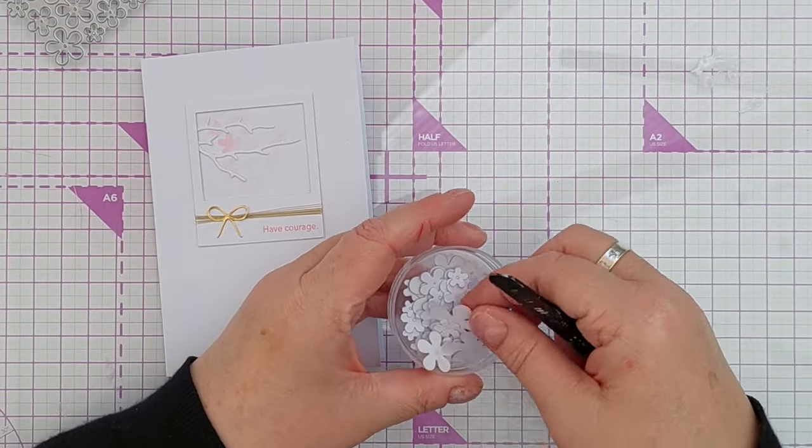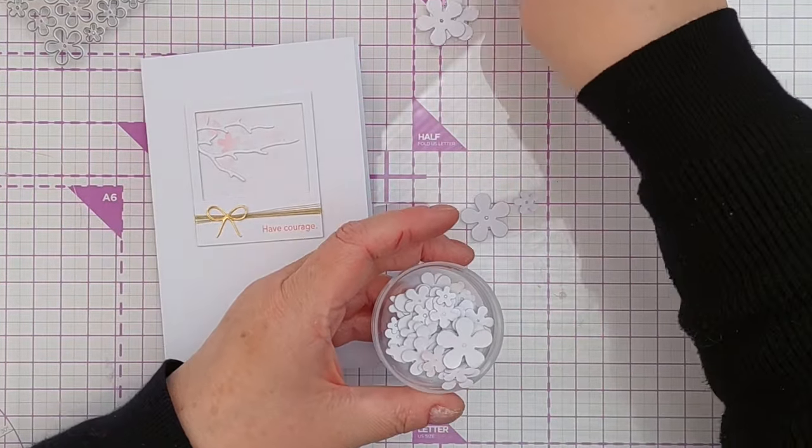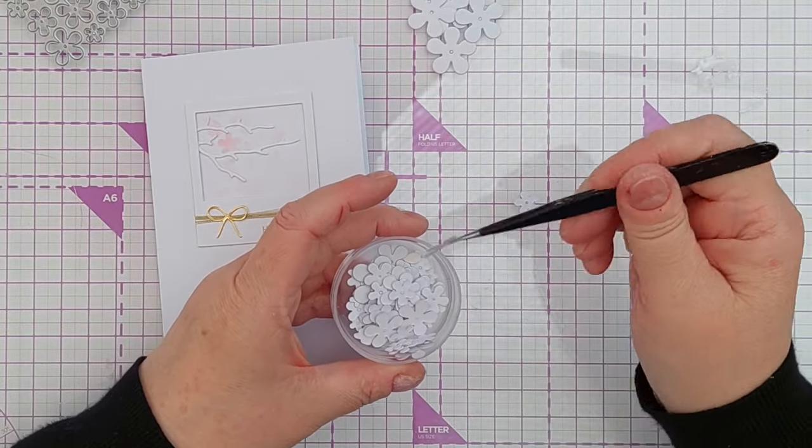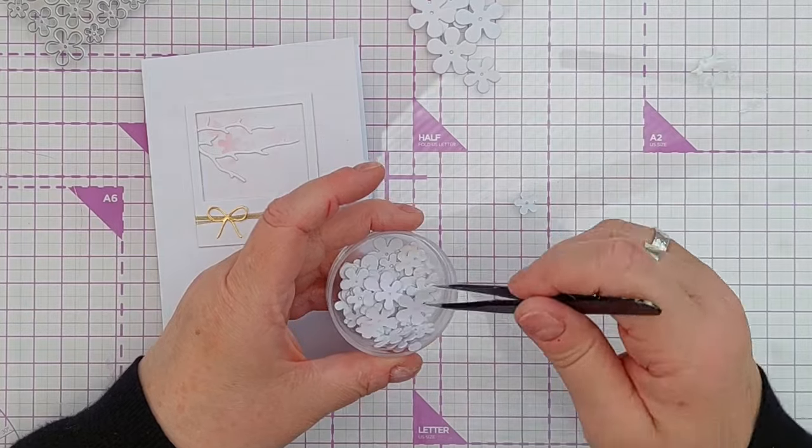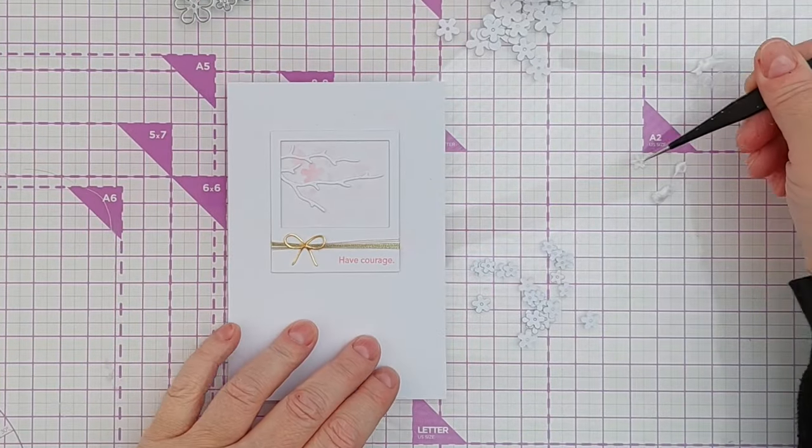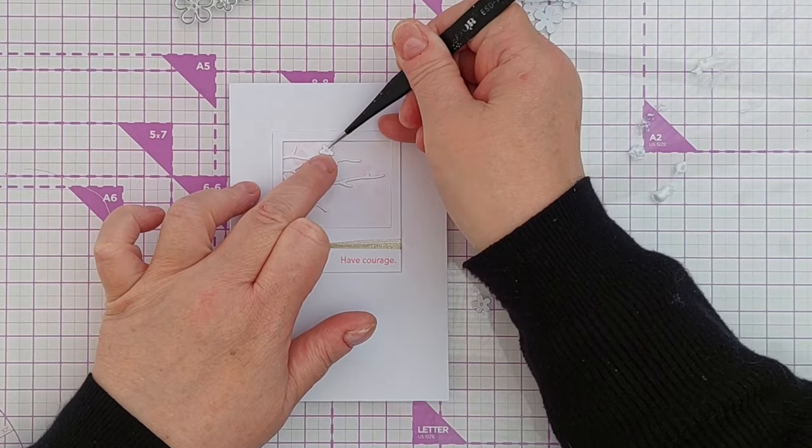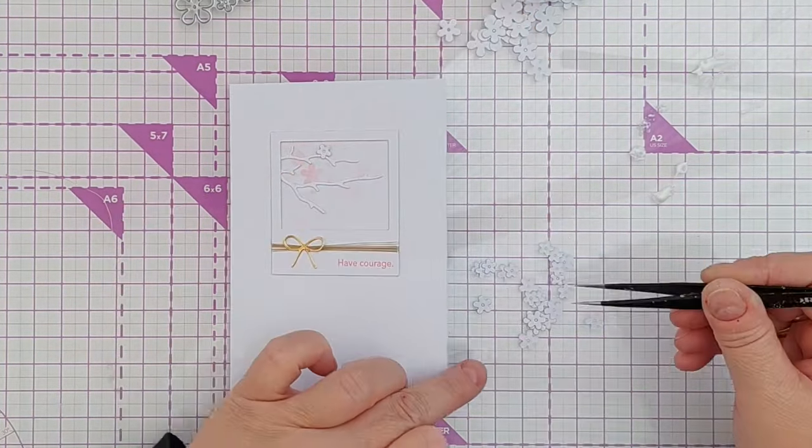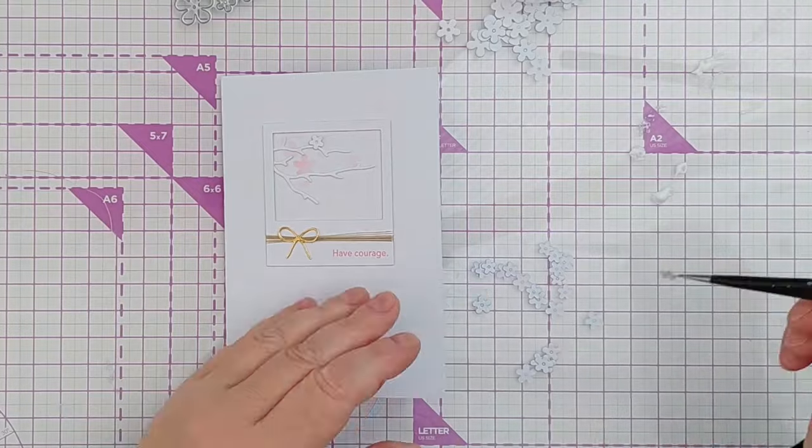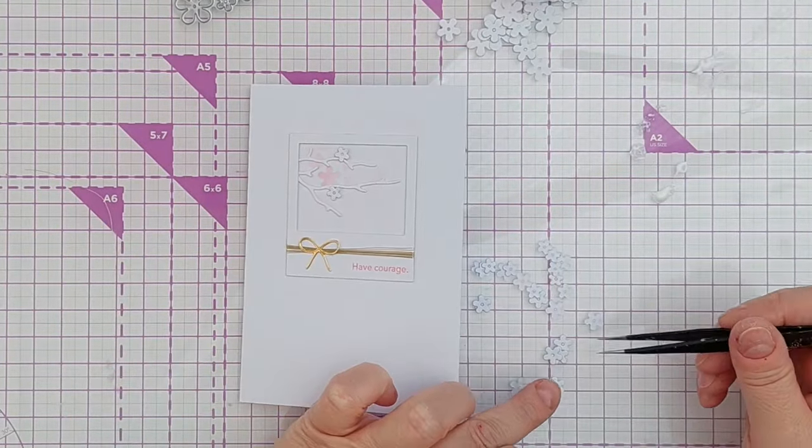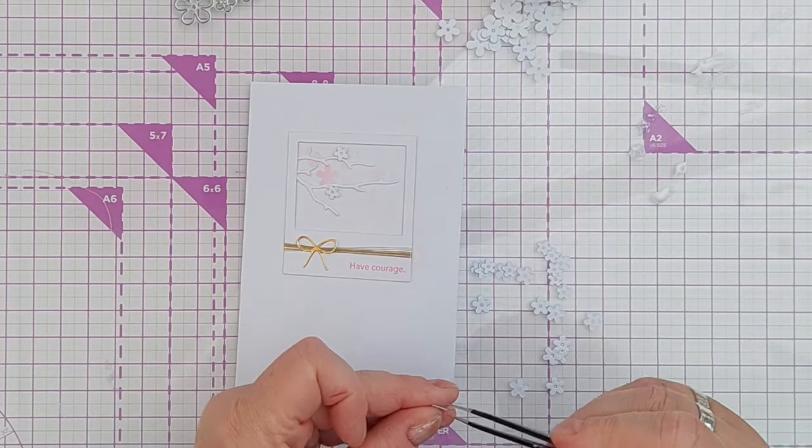And now I'm going to find all the teeny tiny flowers from here and use those on my branches. So when I've sorted that out I'll be back. Okay, I'm going to start with the smallest flowers and have them as a kind of background layer of flowers, and pop them on the end of the branches.